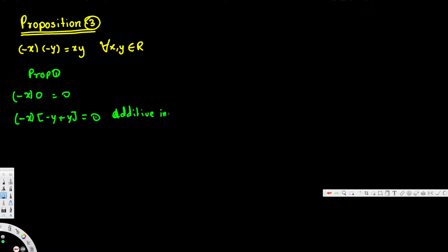The next thing is we are going to use a distributive law. By distributive law, we can write this as negative x times negative y plus negative x times y, and that is equal to zero.